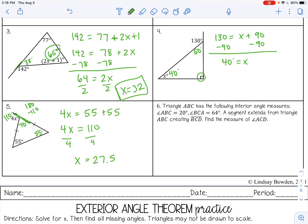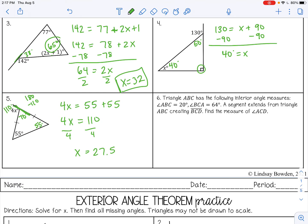And then the last one, triangle ABC has the following angle measures. I'm going to draw this just so we make sure we get the right exterior angle. So I'm just going to make this 20. So let's do ABC. BCA is 64. I didn't really draw that to scale. It's okay. A segment extends from triangle ABC creating BCD. So let me move this C. Find the measure of ACD. So we need to find this.